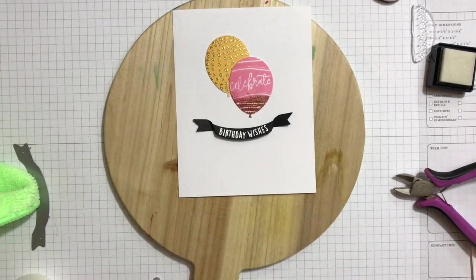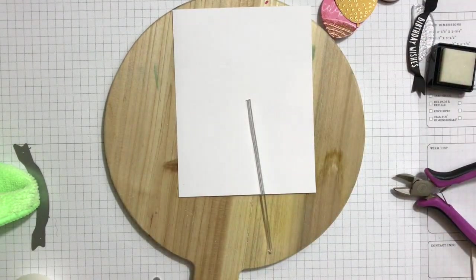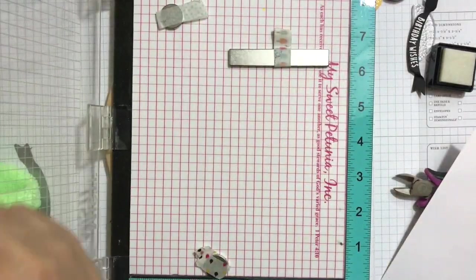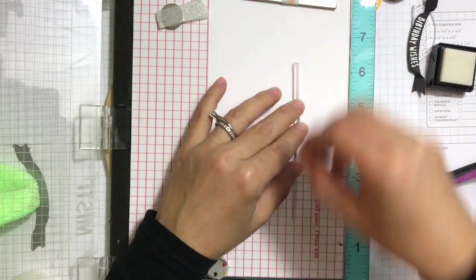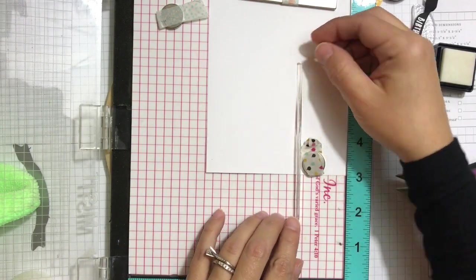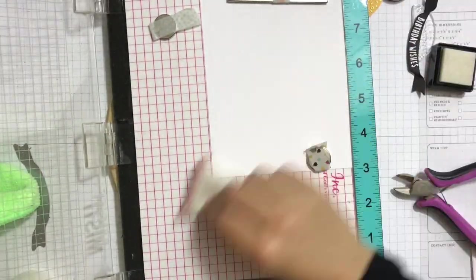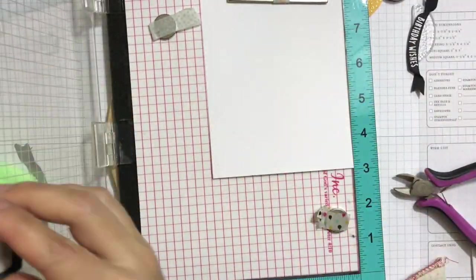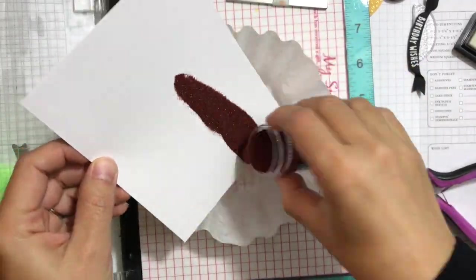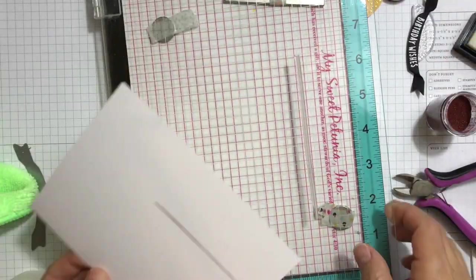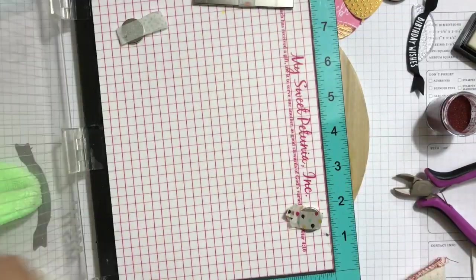Next I'll just stamp the strings for the balloons, just stamping this long string and I'll stamp it twice. Just positioning it in my MISTI, I'm using my magnet to hold that so it doesn't roll. I'll ink that one up and I'm using embossing buddy to apply some powder onto the cardstock so the embossing powder doesn't stick where it should not stick. The first string I'm embossing it with the rose gold embossing powder.